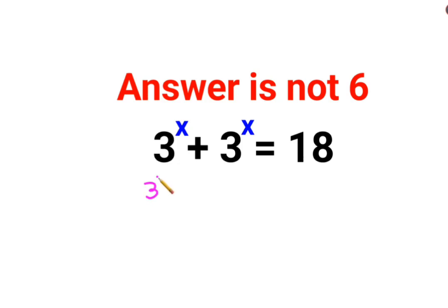So first thing what we need to do is take 3 raised to x common, we are left with 1 plus 1. Let everything remain as it is. So we can say 3 raised to x into 2 equals to 18.